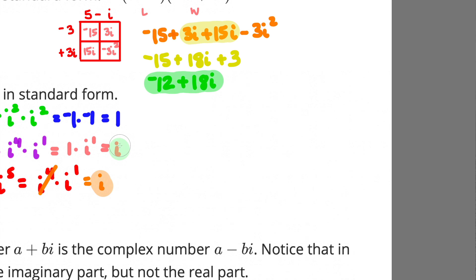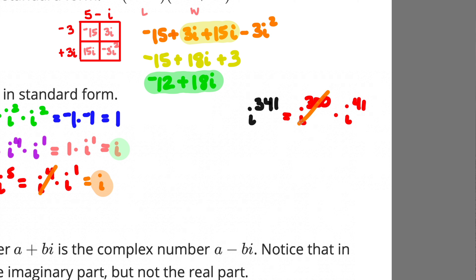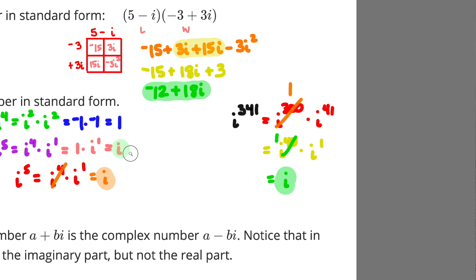To illustrate with a larger example: i^341. Break it into powers divisible by 4. 300 is divisible by 4, so i^300 = 1. That leaves i^41 = i^40 · i^1. Since 40 is divisible by 4, i^40 = 1. So i^341 = i. The rule is: if the exponent is divisible by 4, i equals 1, and the pattern repeats every 4.